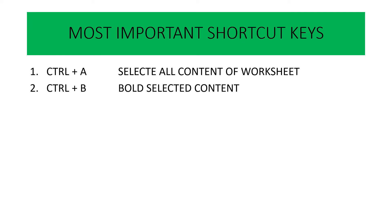Next is Ctrl B. Ctrl B की मदद से हम जितना भी content select किया है उसको bold कर सकते हैं — मतलब गाढ़ा कर सकते हैं. So the use of Ctrl B is to bold selected content.